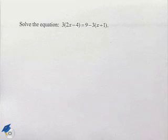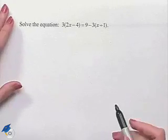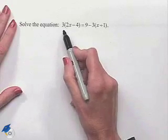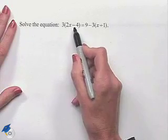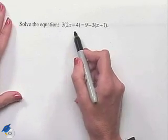Solve the equation 3 times 2x minus 4 equals 9 minus 3 times x plus 1. We'll begin by using distributive property of multiplication over subtraction with our left-hand side of the equation.